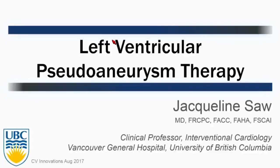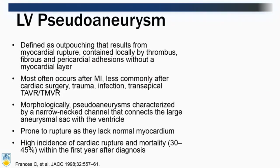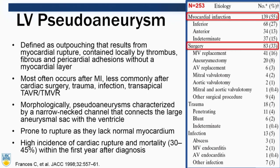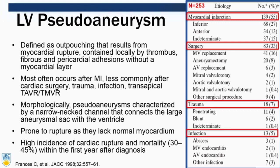LV pseudoaneurysm is defined as an outpouching that results from myocardial rupture, contained locally by thrombus, fibrous tissue, and pericardial adhesions without a myocardial layer. From a systematic analysis of 250 cases of LV pseudoaneurysm, the majority are due to post-myocardial infarction in 55% of cases, about a third from post-surgery, 7% from trauma, and 5% from infection.